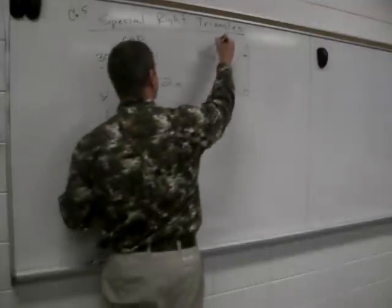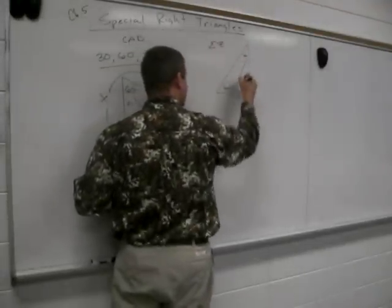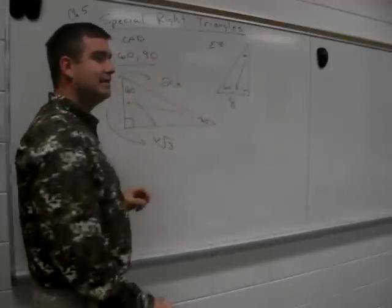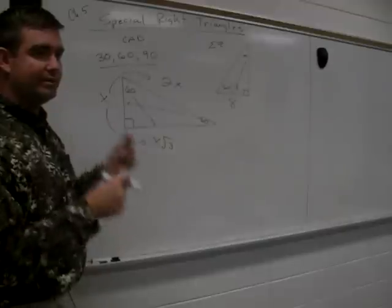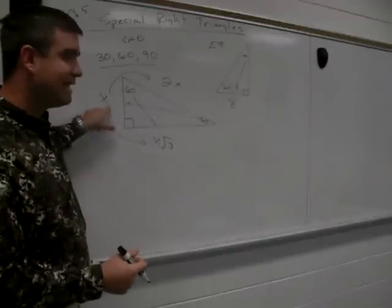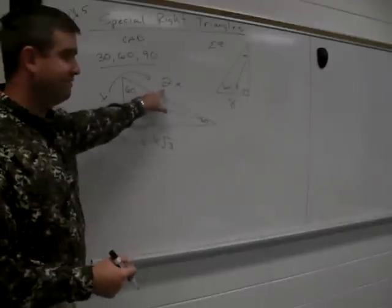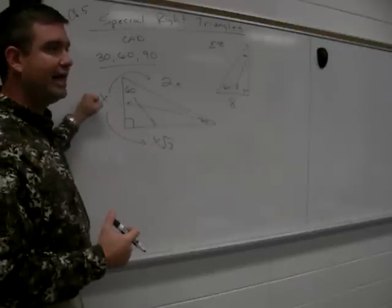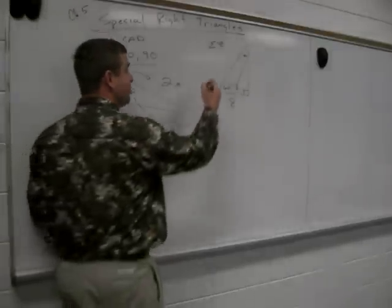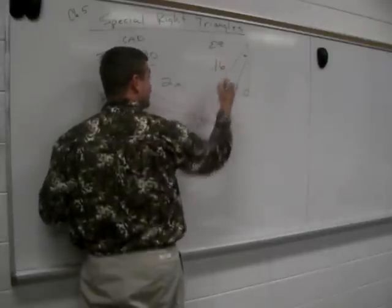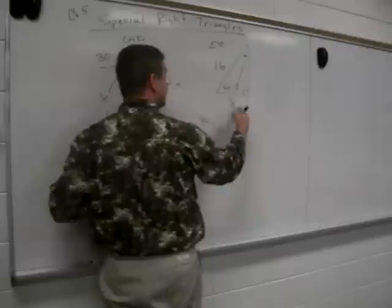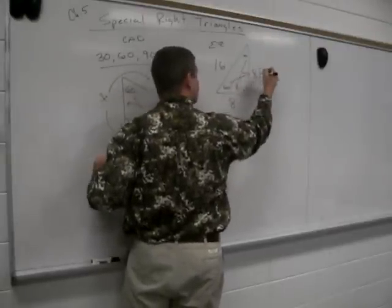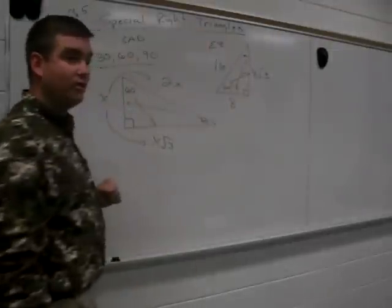All right, the easiest one is if they give you the 30-degree angle side. If they tell you that this side here is 8, then just like that, you ought to be able to tell me the answer, right? Because that's the easiest side. They gave you x. You didn't have to divide by 2. You didn't have to divide by root 3. They gave you the simplest term, x. So instantly, you ought to be able to tell me the hypotenuse. 16. Very good. And instantly, you ought to be able to tell me the 60-degree side would be what? 8 times root 3.